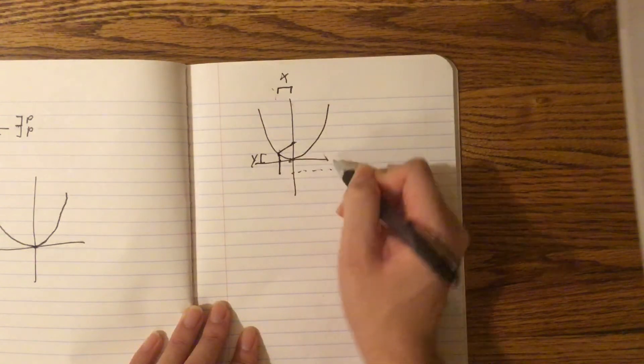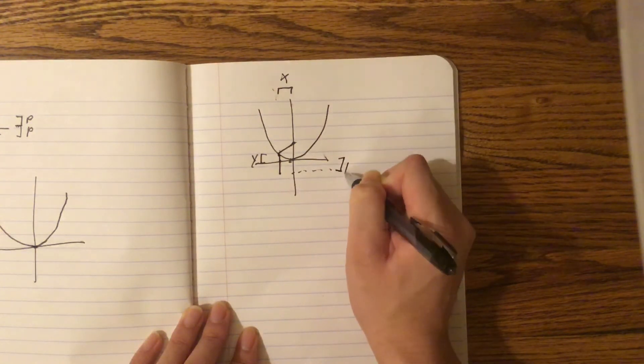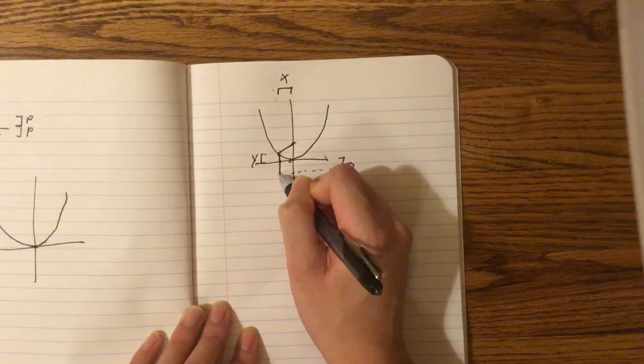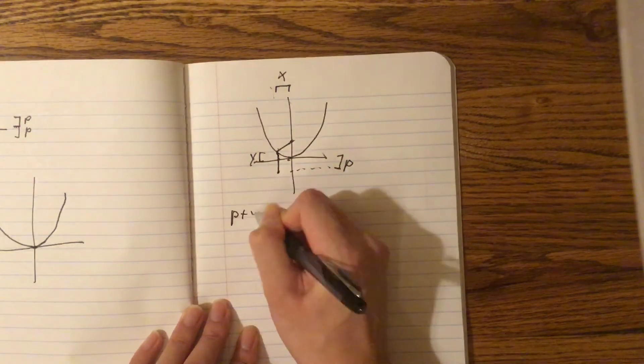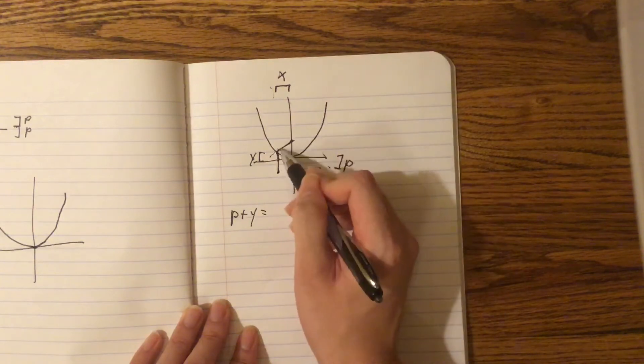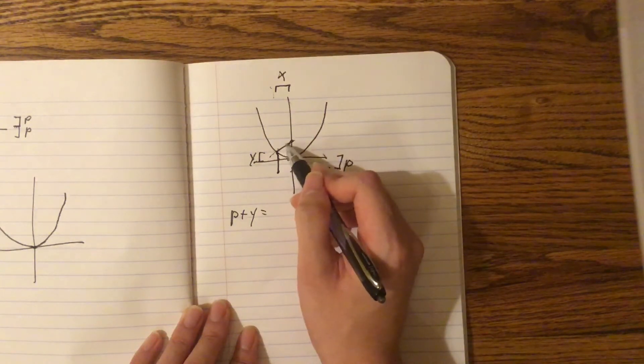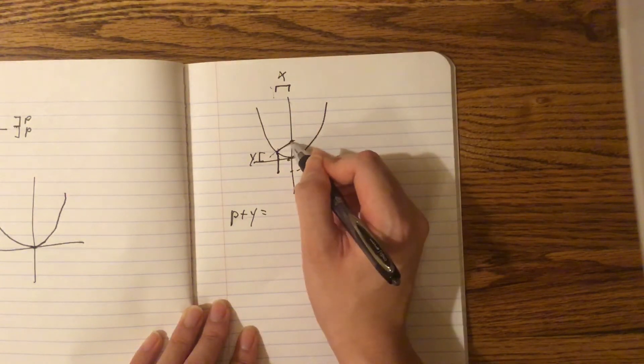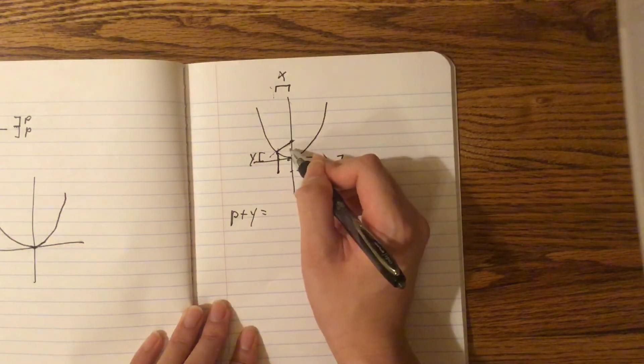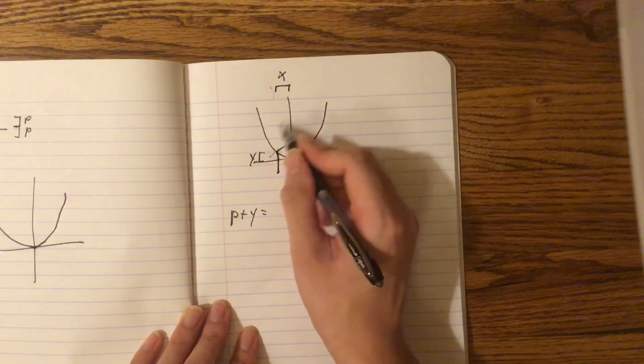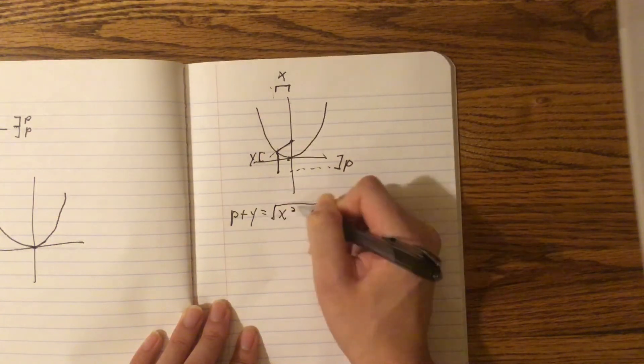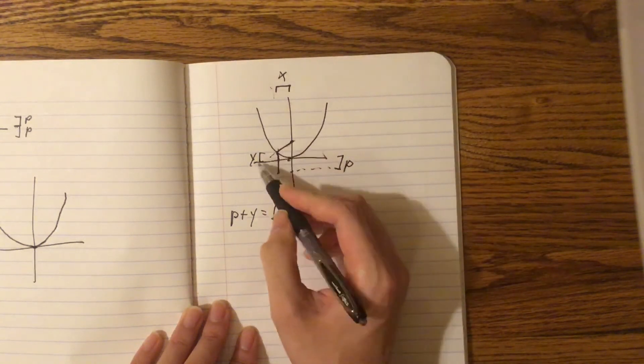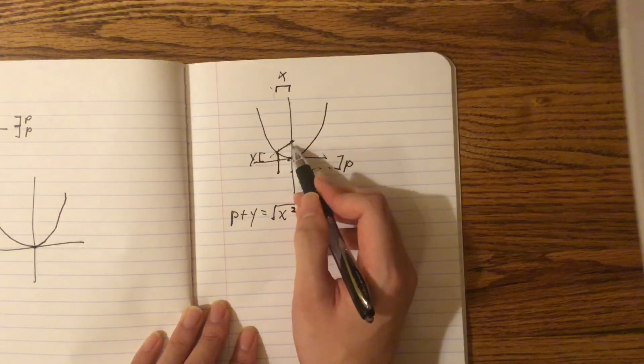Now, what is this distance from here? Well, we know, let's just say this distance is p, so this distance from here to here would be p plus y. So we get that p plus y equals, well, what is this distance? We can use Pythagorean's Theorem. So what's the height of this triangle, and what's the base of the triangle? Well, the base of the triangle is just x squared, so we root that.